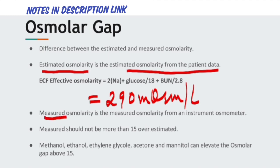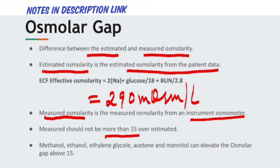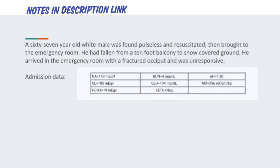Measured osmolarity is measured using an instrument called an osmometer. Generally, measured and estimated osmolarity are the same. However, if the difference between estimated and measured osmolarity exceeds 15, it indicates some extra substance is present in the patient's blood — such as methanol, ethanol, ethylene glycol, acetone, or mannitol — which can elevate the osmolar gap.